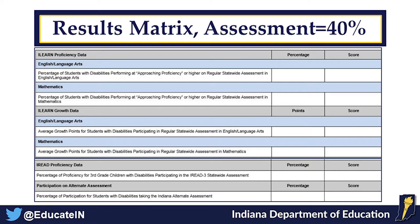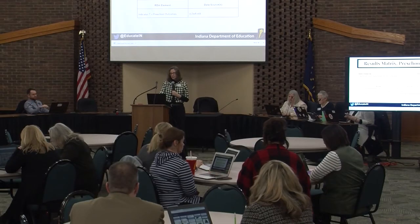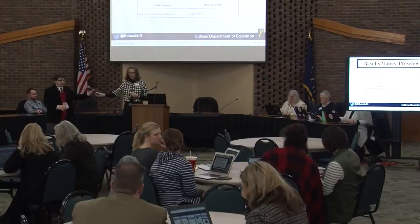When you look at results, we've got preschool, graduation rate, LRE, and assessment all involved. On your matrix you could see your percentages and earn a score of one, three, or five depending on the indicator. We have iLEARN proficiency for ELA and math, growth data, iREAD proficiency, and participation on the alternate assessment. The data comes from reports you send to us — statewide testing results and growth and proficiency data from the Office of Accountability at DOE.